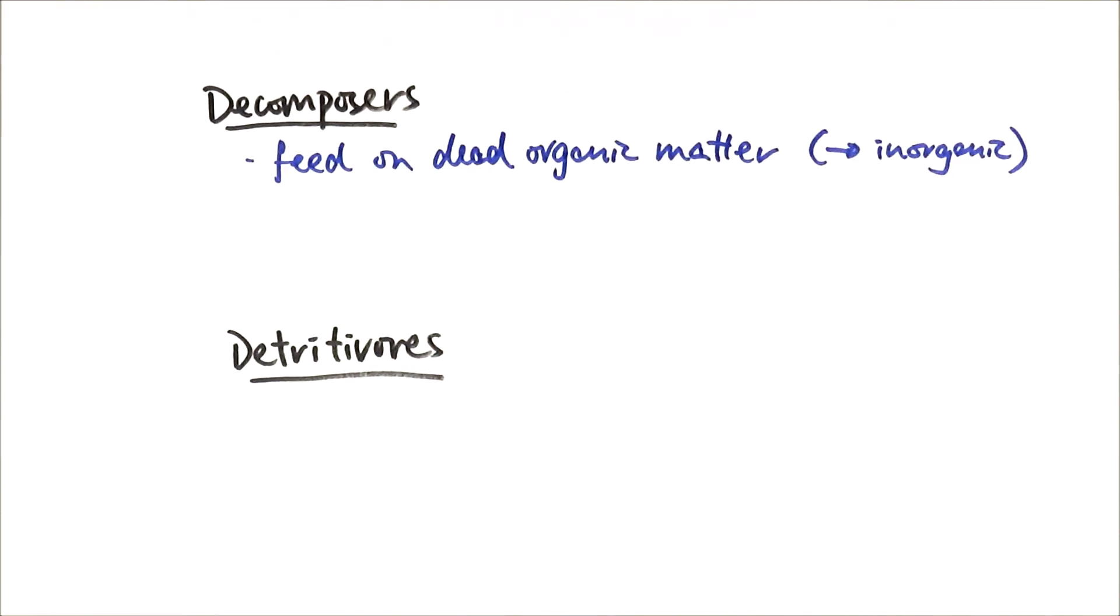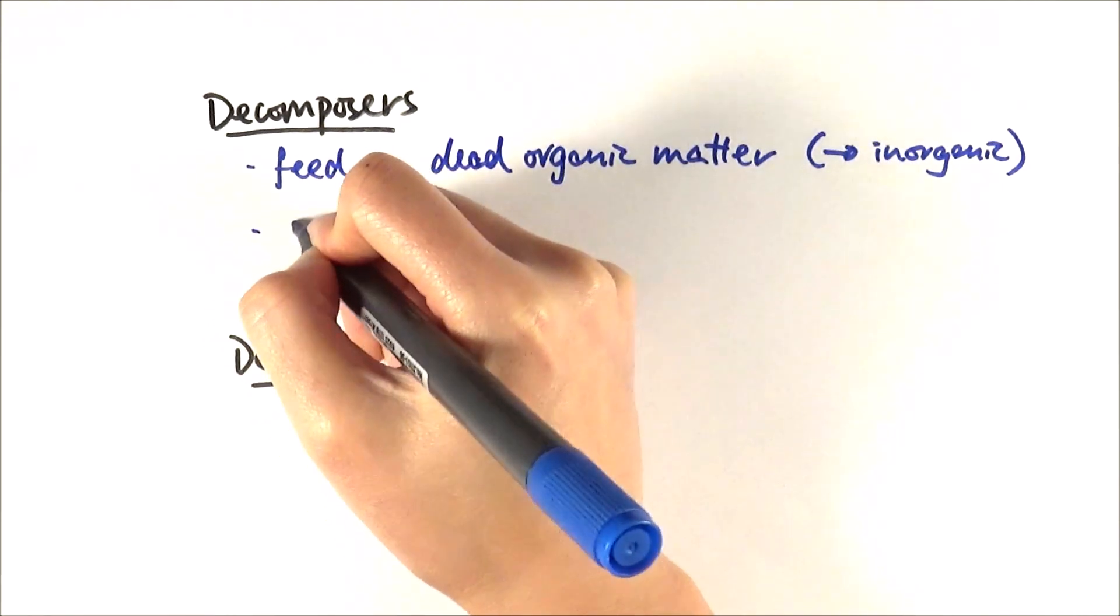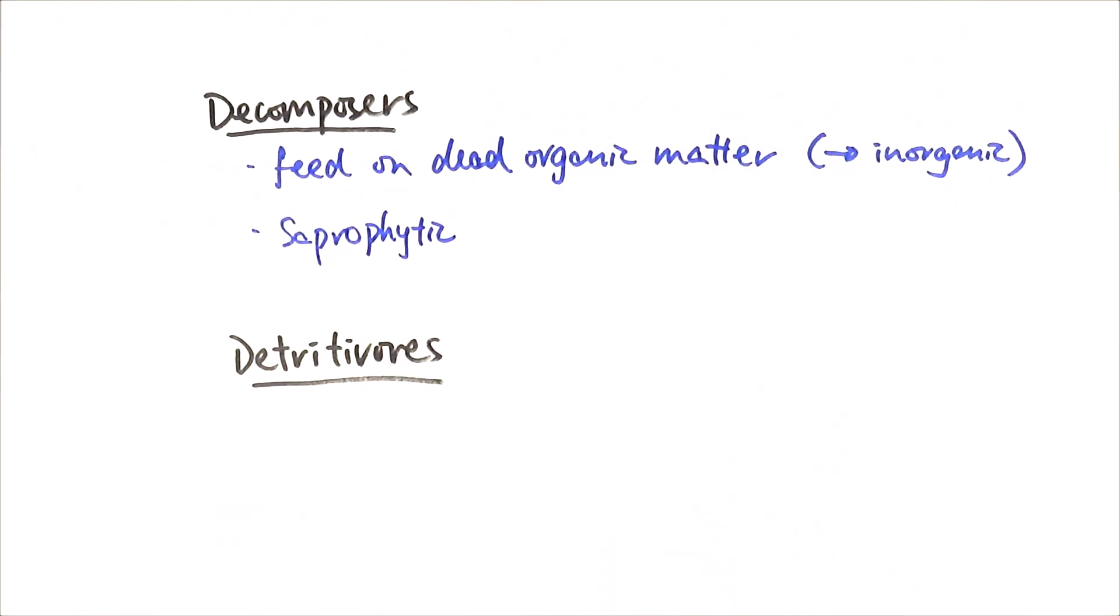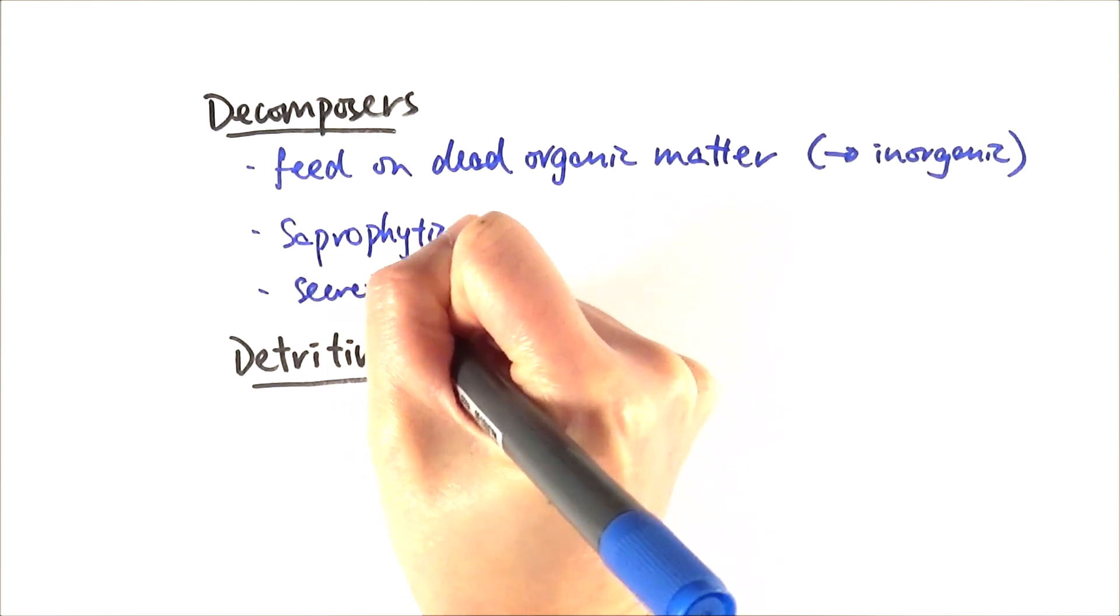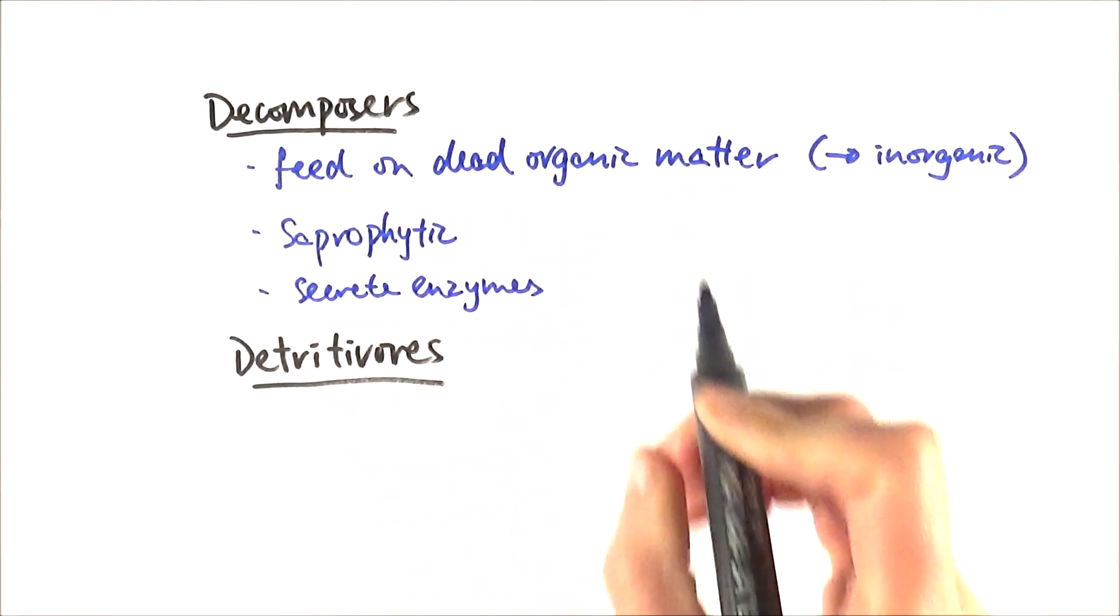Decomposers are organisms that feed on dead organic matter and turn them into inorganic stuff. For example, bacteria are often decomposers. They are saprophytic or saprotrophs, meaning they feed on dead organic matter. The way they do it is that they secrete enzymes out of their body to digest the food.